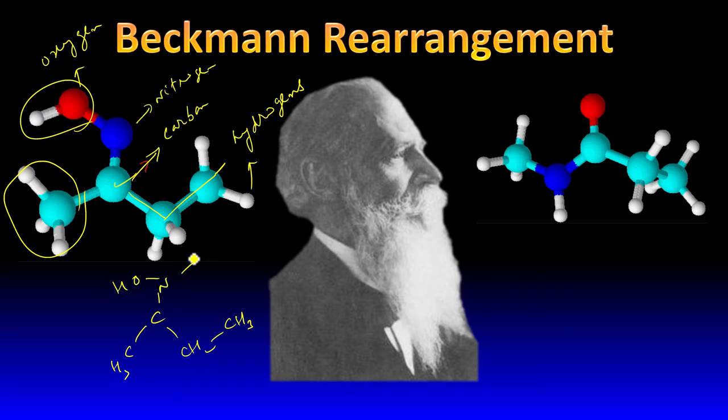Nitrogen is attached to OH, so obviously it has got a lone pair. Nitrogen needs one more bond and carbon needs one more bond, therefore this bond is a double bond. And as you can see, this is called an oxime — C double bond NOH.